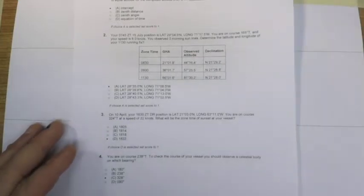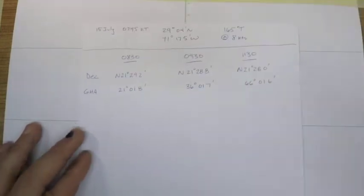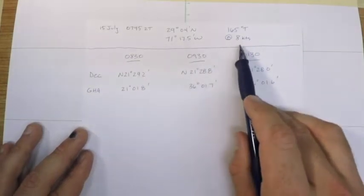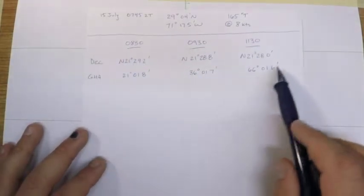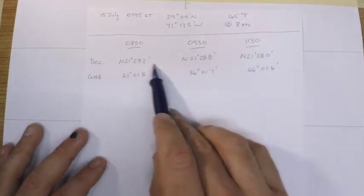So the first thing that I would do in this case is recreate the information given to us in the problem. So I've written down the date and the time, our position, our course and speed, and then I've started to create a table for our three sight reductions that we need to do.